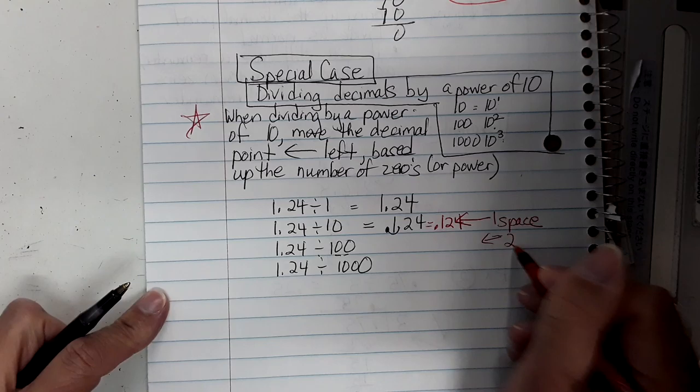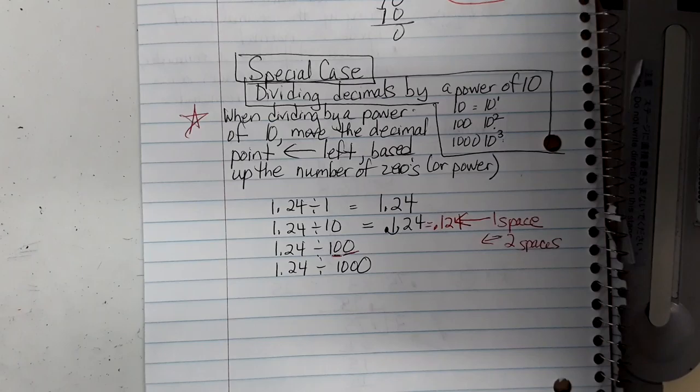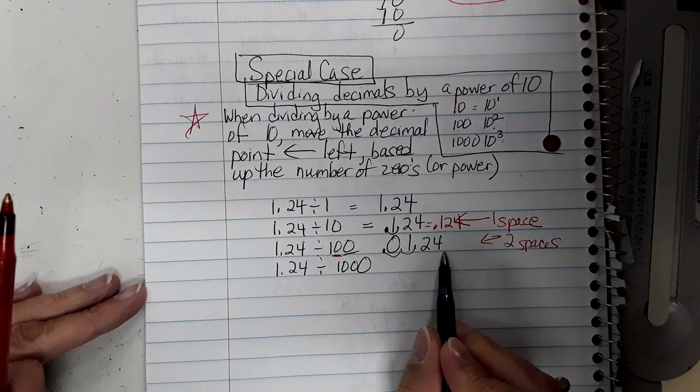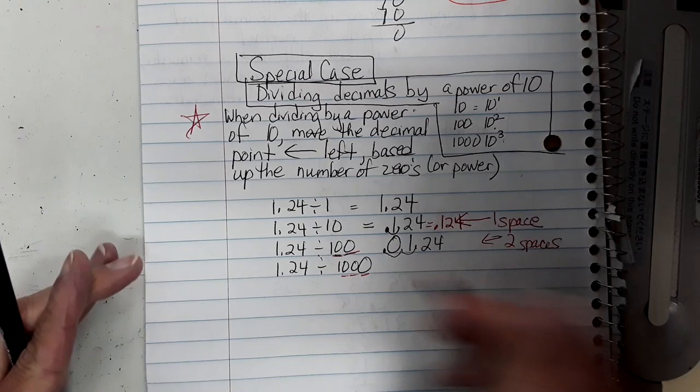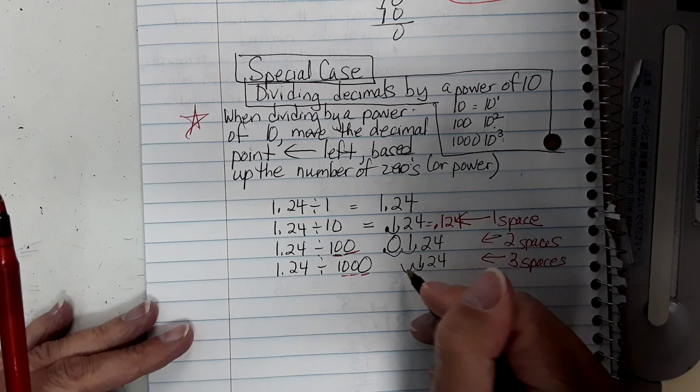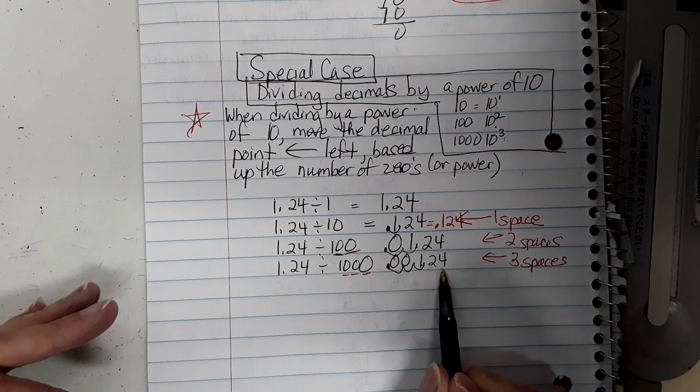One hundred has two zeros, so move it two spaces left. Starting at one and twenty-four hundredths, move once, move twice, fill in with a zero — answer is zero point zero one two four, which is one hundred and twenty-four ten-thousandths. For one thousand, there are three zeros, so move three spaces left, filling in two zeros — giving one hundred and twenty-four hundred-thousandths.